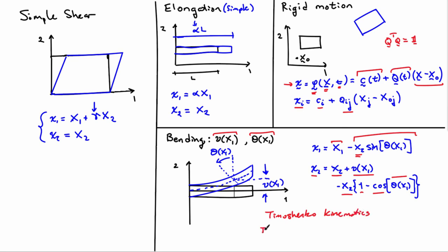If you want Bernoulli-Euler kinematics, what you'd add in is an extra assumption which is that the slope of the neutral axis—so the derivative of V with respect to X1—is equal to the tangent of theta, so that the rotation and the slope are tied together. So that would give you Bernoulli-Euler beam bending theory. But as it stands as I've written it, it's a Timoshenko beam that you would get out of this type of deformation.